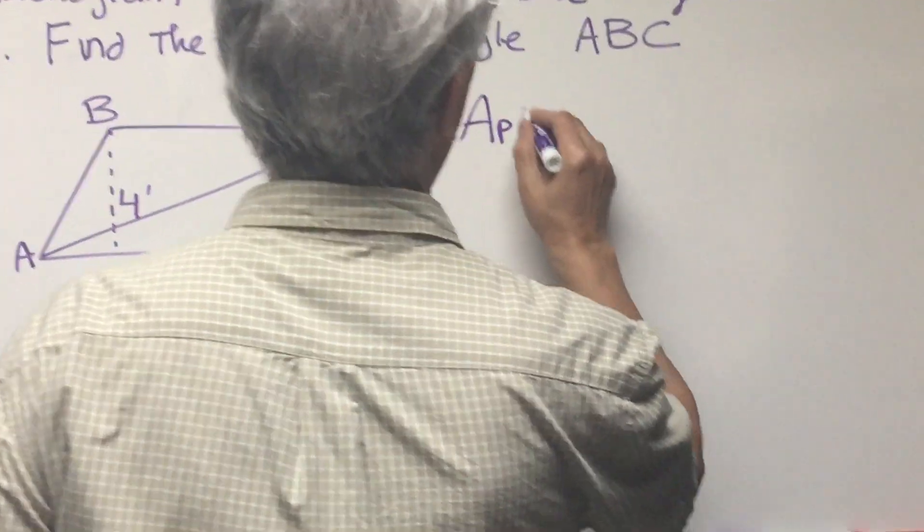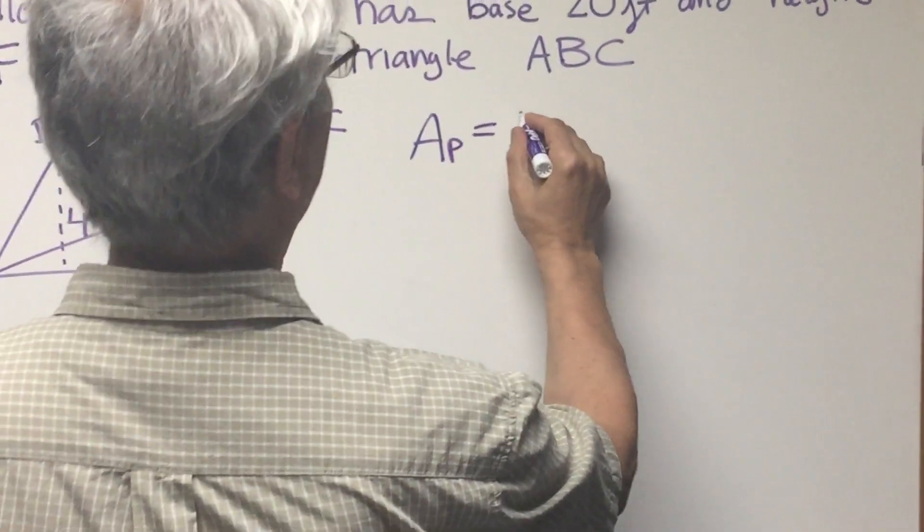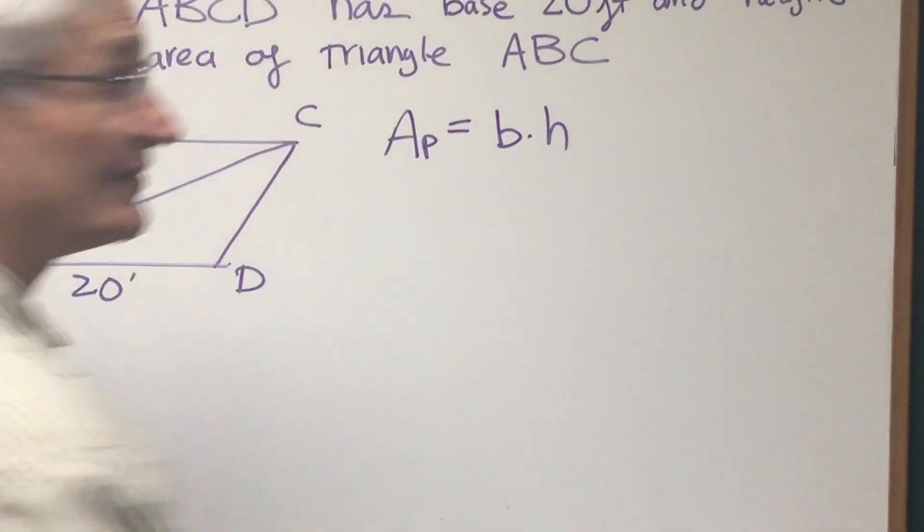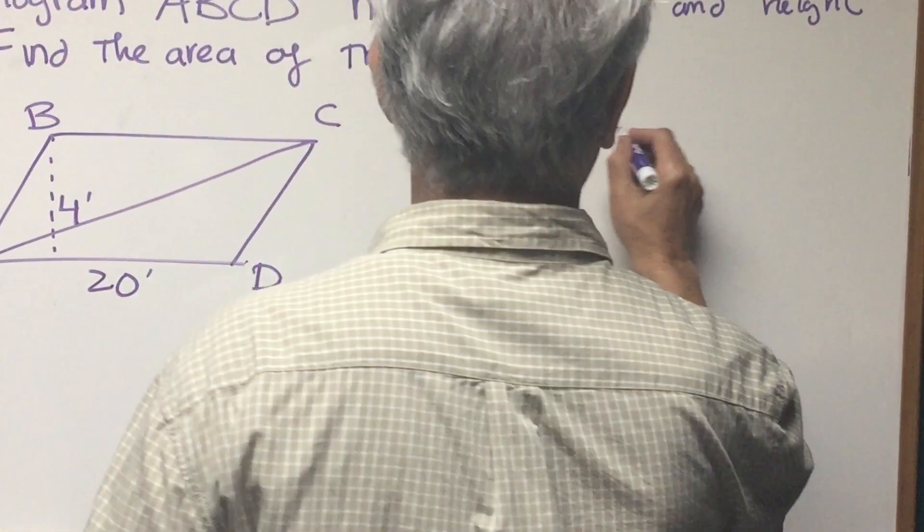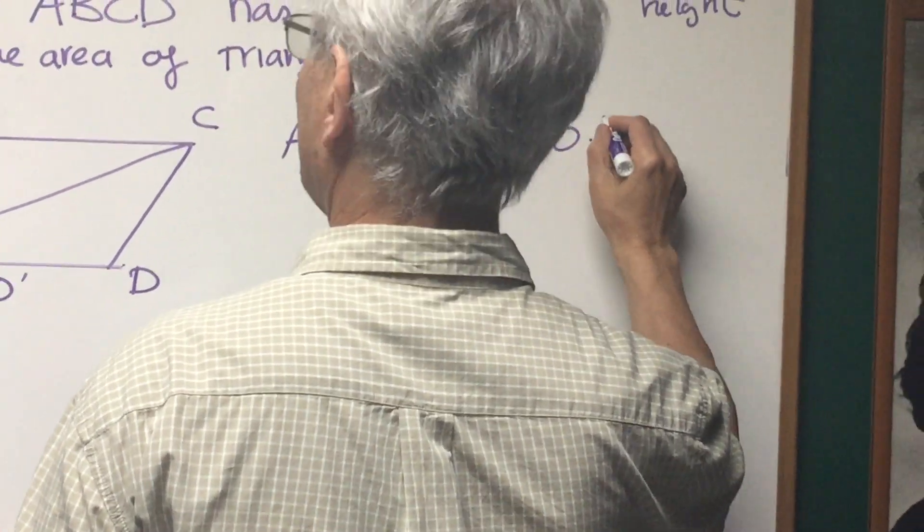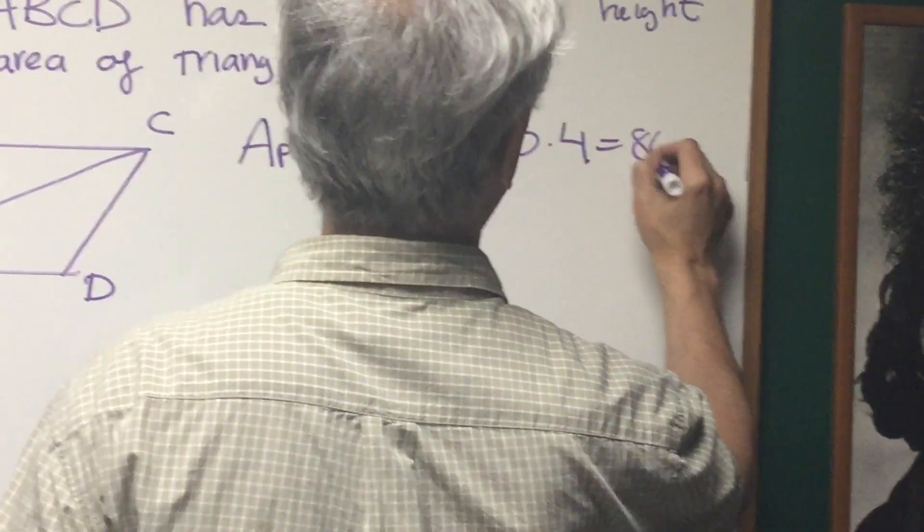So the area of a parallelogram is going to be the base times the height. Simply that, same as it is for a rectangle. So it's going to be base times the height, 20 times 4, which is 80.